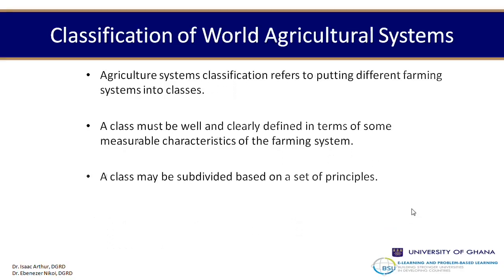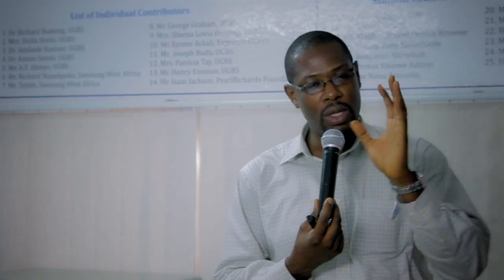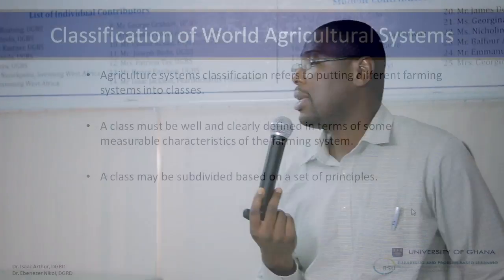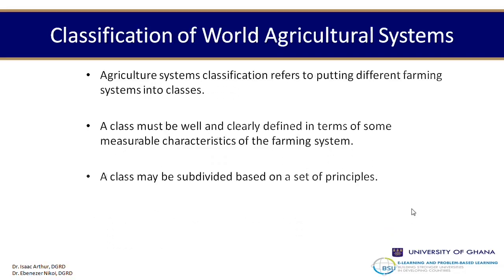Classification involves the subdivision of areas or objects according to distinguishing characteristics. The agricultural system actually refers to putting different farming systems into classes. A class must be well and clearly defined — without that definition, one would find it very difficult to understand and would blur the different classes available. The classes may be subdivided based on a set of principles. There are a number of theories and ideas put in place to help us understand the classifications of agricultural systems, but there is no general or generic agricultural system.